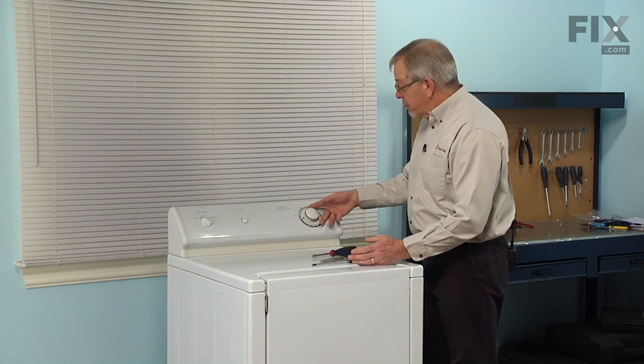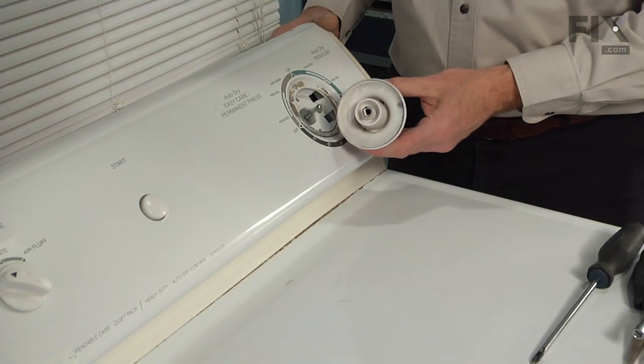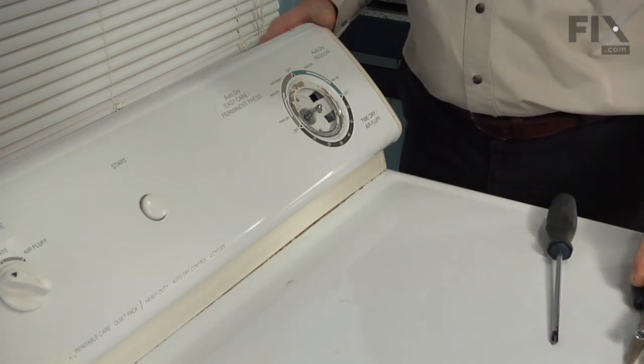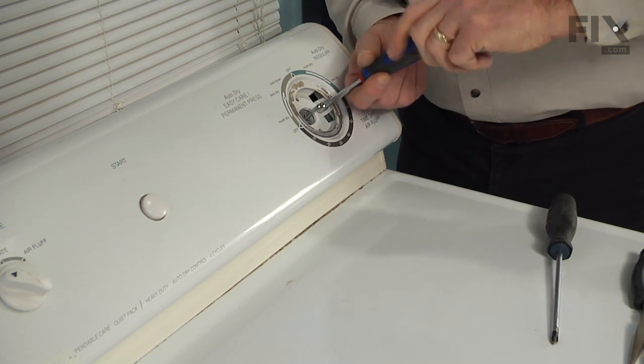Next we're going to start by removing the timer knob, so just pull it straight off of the shaft. You'll note that there are two quarter-inch hex head screws that secure that timer to the console, so you can go ahead and remove those.